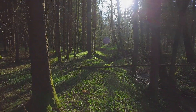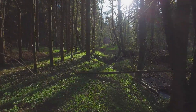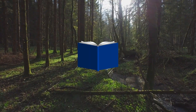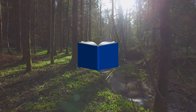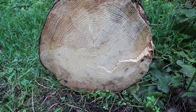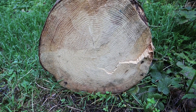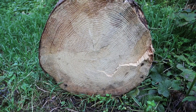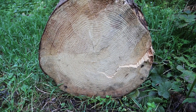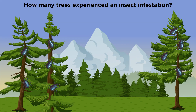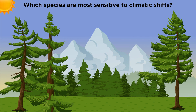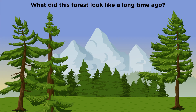Forests are living libraries that catalog the natural world. Trees are like books or journals — they store information about their past. Using dendrochronology, we can reveal some of the mysteries trees hide and learn about their past in order to better predict their future. Did a single tree have an insect infestation, or did an entire forest suffer? Are some tree species more sensitive to climatic shifts than others? What did the forest that lived in an area long ago really look like, and what might the forests of the future look like?